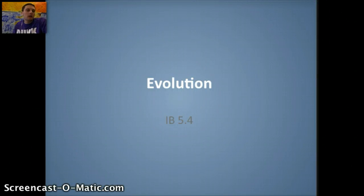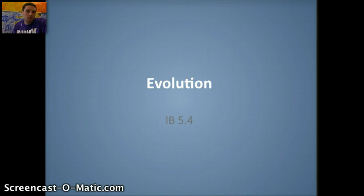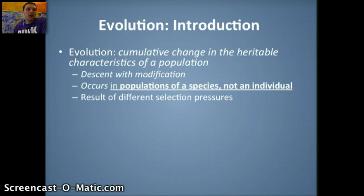In this video, we're going to talk about the topic of evolution, or change in a species population over a long, gradual period of time. This is IB 5.4, and we're going to combine it with our other topics within evolution for our evolution units. The first thing we want to do is define the topic of evolution: a good definition is the cumulative change in the heritable characteristics of a population.